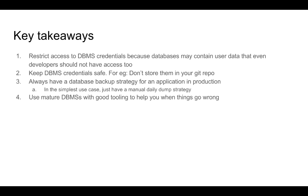The important takeaways from this module are: first, we should be very careful about the database credentials we generate — if we are not careful, people will have access to user data stored in the database. These DBMS credentials should never be stored in a git repository, because if the project source code is open, people can use those credentials to log into the database and cause serious harm. Second, it is important to have a data backup and data recovery strategy for a production application — at minimum, a manual daily database dump is a good starting point. It is also important to use mature DBMS systems that have a large community and good tooling to help when things go wrong.